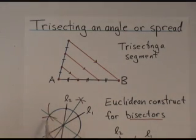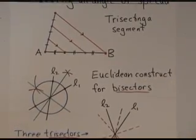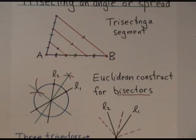However, dividing angles into three or five or seven equal angles is much harder and with Euclidean constructions it's impossible, as we now know.